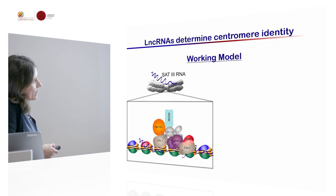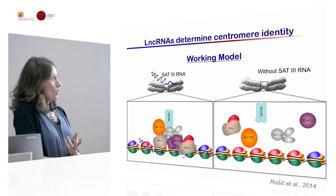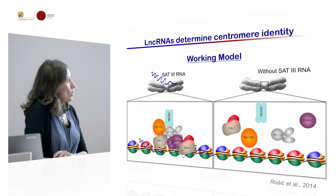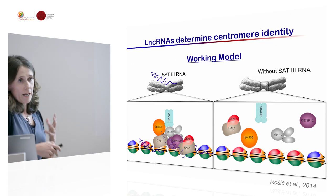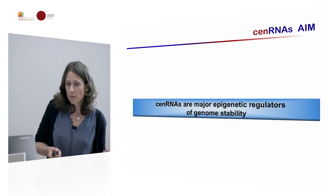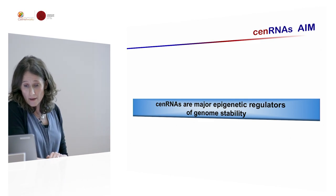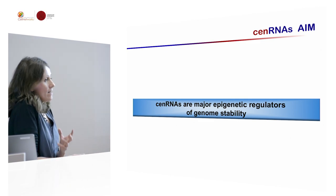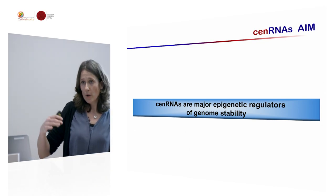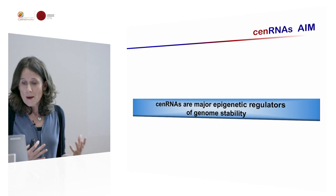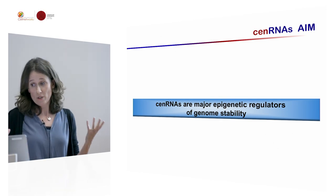We hypothesized that we need RNA — long non-coding RNA — to really maintain centromeric chromatin in Drosophila, and probably also in other species. If you don't have the RNA, the kinetochore will fall apart. This is really where we started the hypothesis for the ERC grant that we received: that centromeric RNAs, either transcribed from centromeres or localizing to centromeres, or both, may actually be a major epigenetic regulator for genome stability and centromere maintenance.